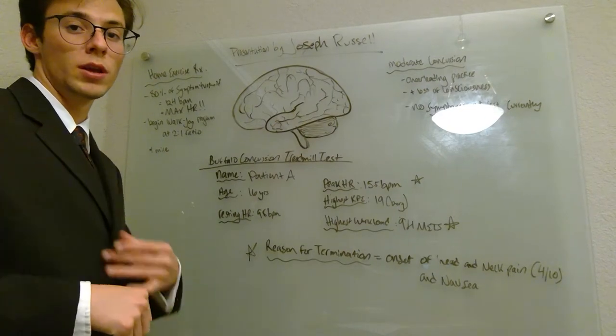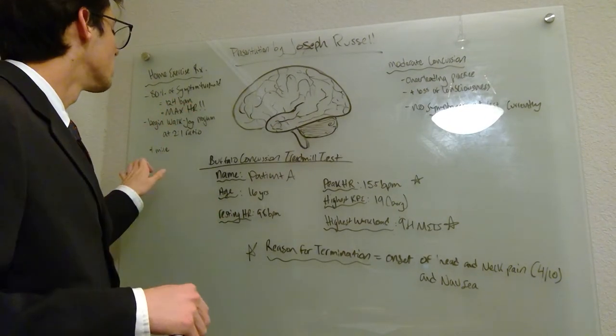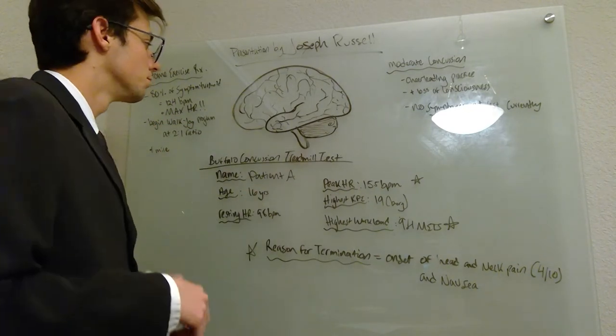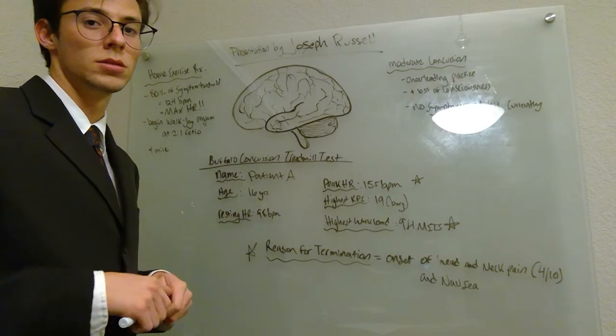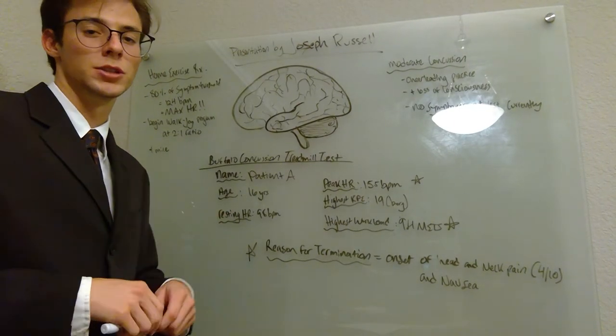As long as she can count her heart rate or record it through a heart rate monitor and keep below 124 beats per minute, she can run up to a mile, walking and jogging at a 2-to-1 ratio. That is how you analyze the results of a Buffalo concussion treadmill test and apply it to patient care.